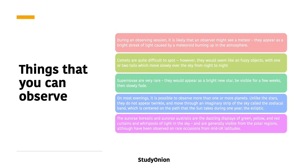Supernovae are actually quite rare for an observer to see, but if you did see one it would look like a bright new star and be visible for a couple of weeks before slowly fading.